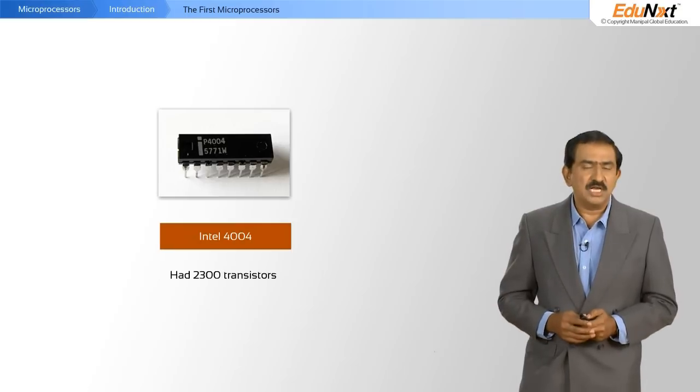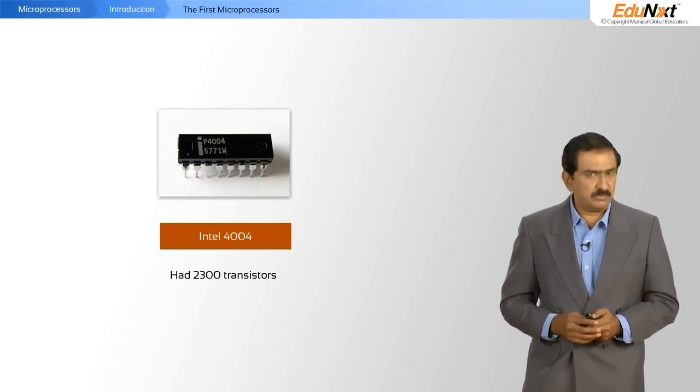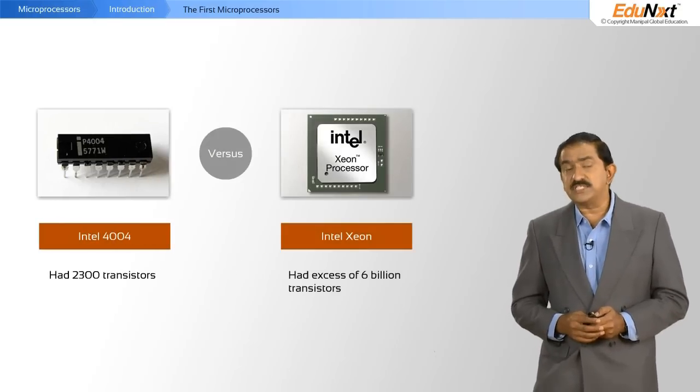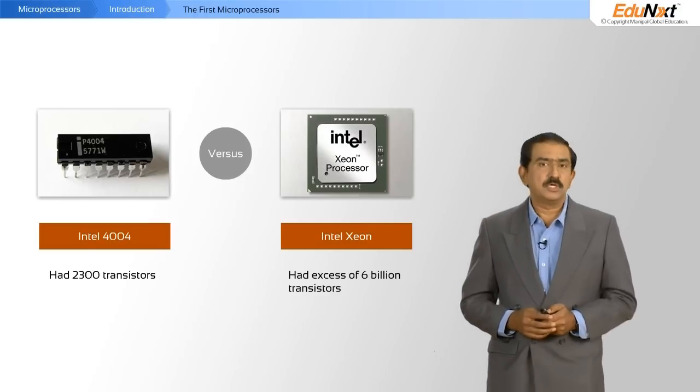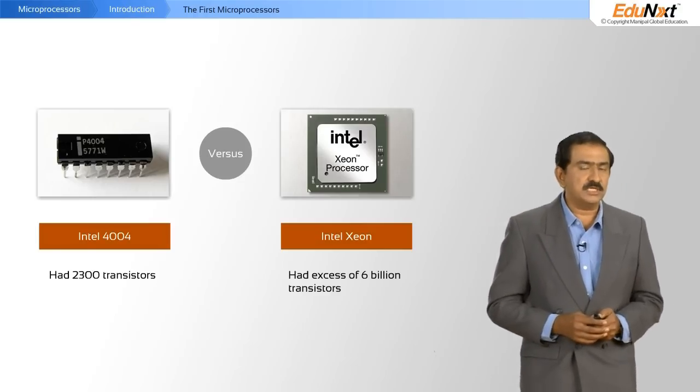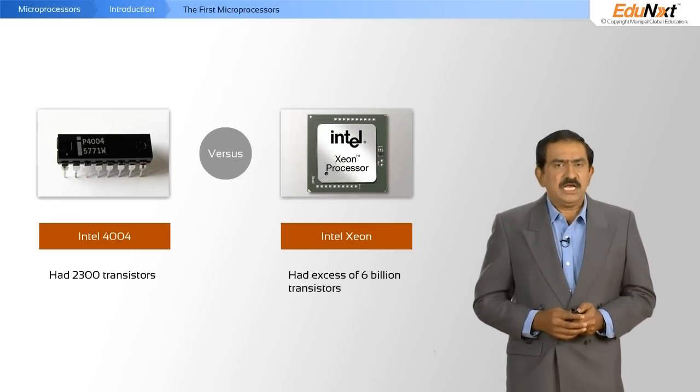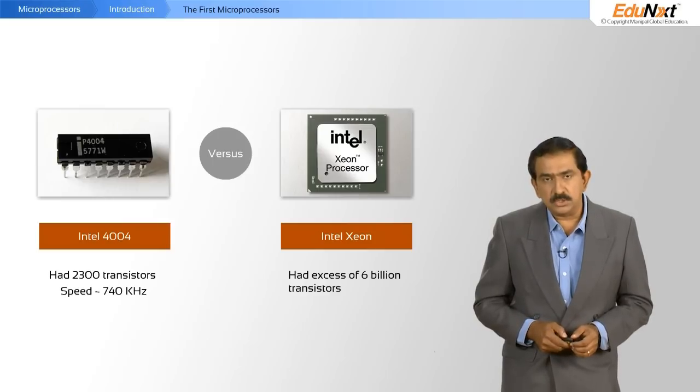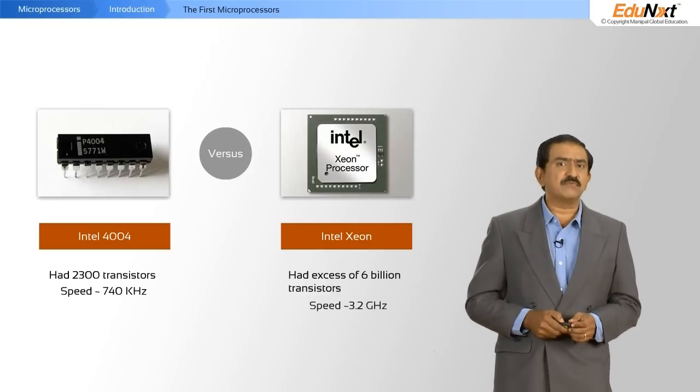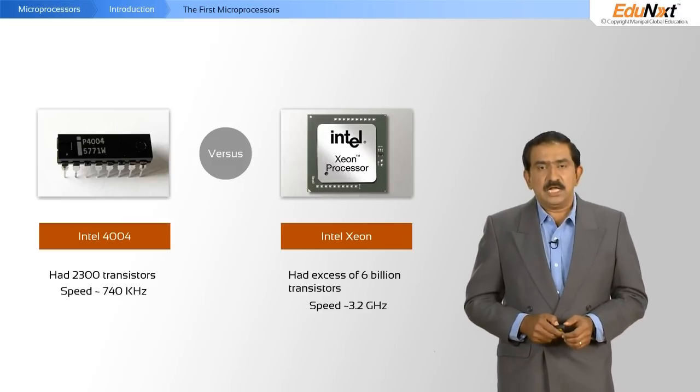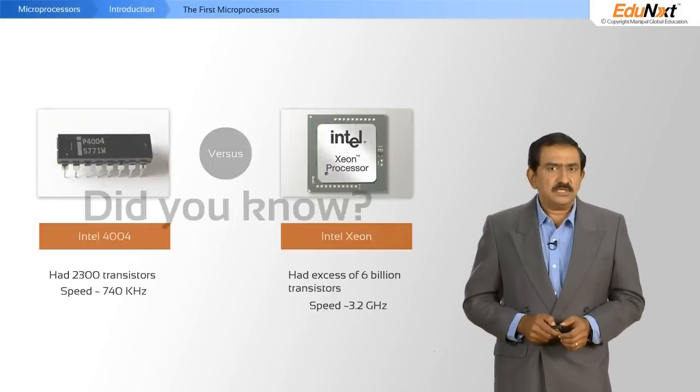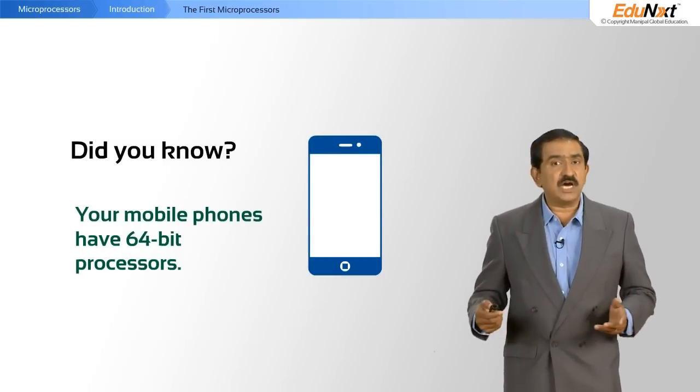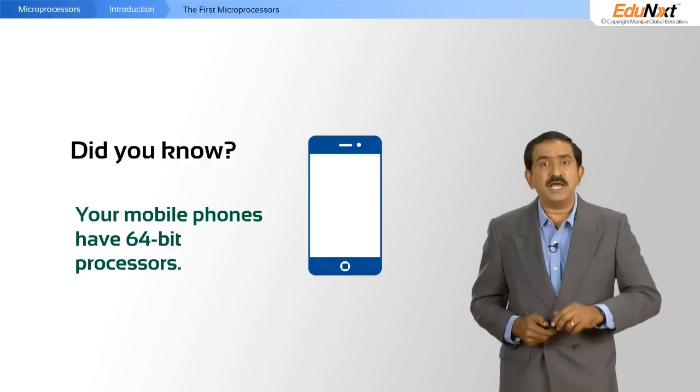This was state of the art at that time, November 15, 1971, when this was first launched. Today's processors have excess of 6 billion transistors. That's the advance you've seen over the last 30 years. The 4004 ran at 740 kilohertz. Today's processors run at an excess of 3.2 gigahertz. And if you were to think of where we have gone from 4 bits, today, state of the art is 64 bits, even on your mobile phone.